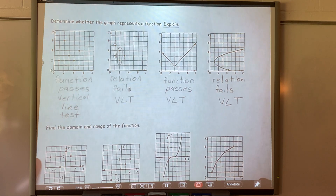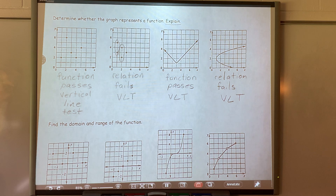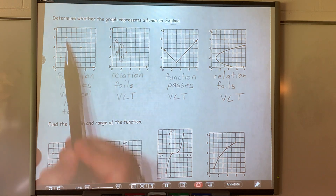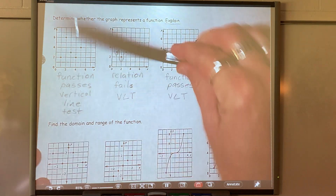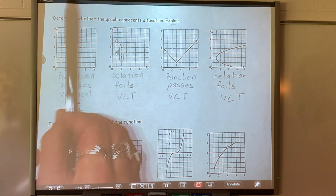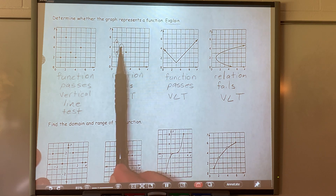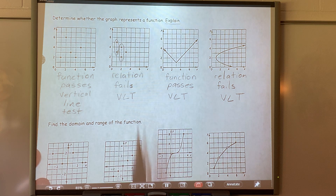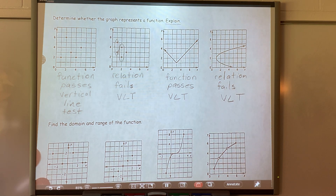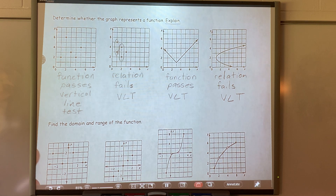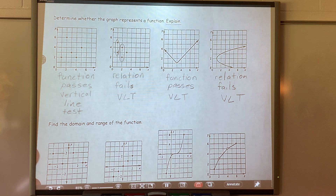If we look at a graph, you can tell if it's a function by looking at the vertical line test. This one was a function — we look up and down, vertical. This one passed the vertical line test. This one failed the vertical line test because these two points made it fail. This one passed, and this one failed.